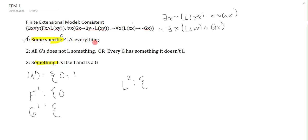How do I make the first sentence true? Some specific F L's everything. That means 0 has to L itself and 0 has to L 1. Why? Because those are everything in my universe of discourse. If I added 2 here then I would have to add 0 comma 2 here and so on to make sure that this first premise is true.